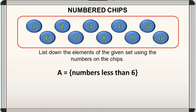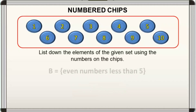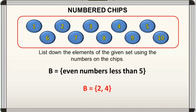For the first set — correct, the elements of set A are 1, 2, 3, 4, and 5. For the second set — good, the elements of set B are 2 and 4.